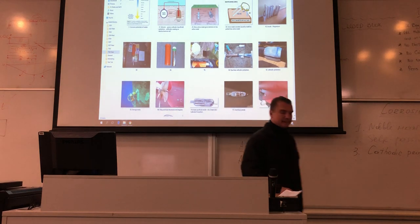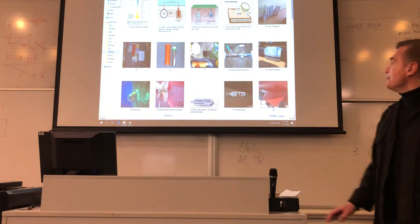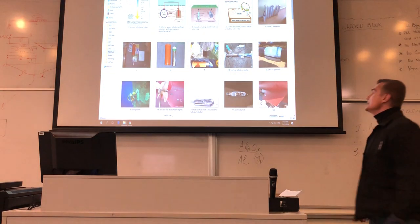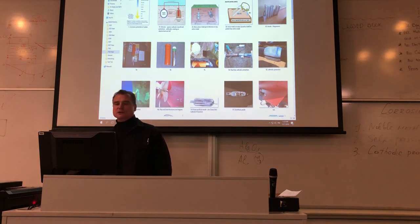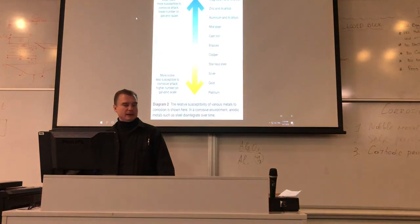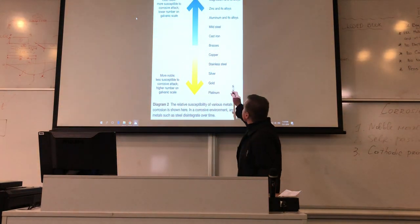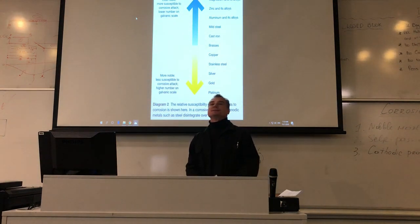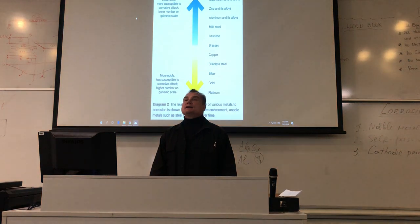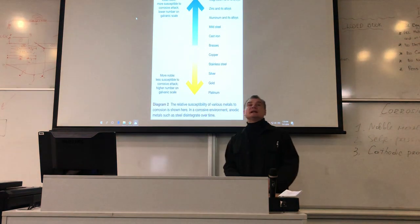The next option to protect metals from corrosion is called cathodic protection. What is cathodic protection? Imagine you have some metals and you need to protect mild steel from corrosion. What is going to happen if you have a structure made of mild steel and you connect magnesium to that mild steel?